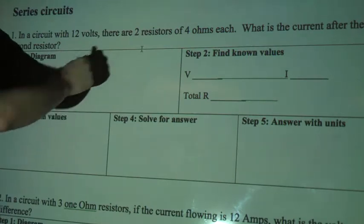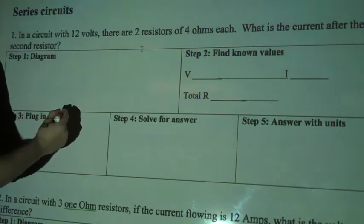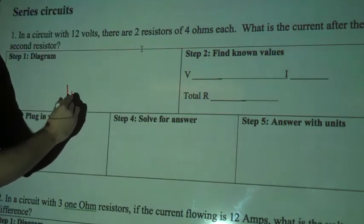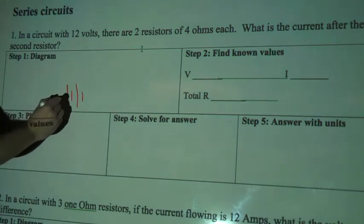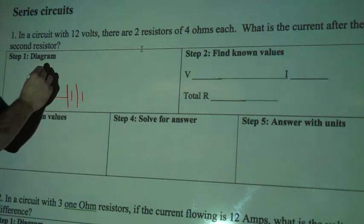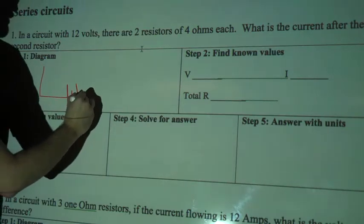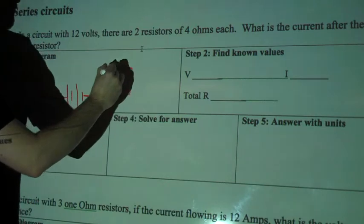When you're drawing this, you're going to draw your battery or your power source as lines like this. You're going to have one arm coming out this way, and one arm coming out this way.